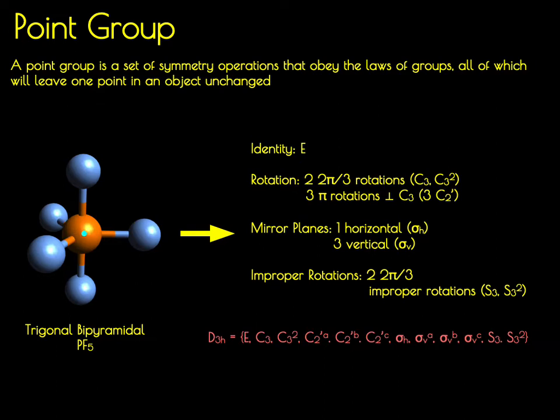These include the identity element, two rotations along the z-axis, three rotations in the xy plane, a horizontal mirror plane, three vertical or dihedral mirror planes, and two different improper rotations. We can group these together and assign this molecule to the D3H point group. What we're going to do is define what we mean by that notation D3H and learn how we can easily assign this molecule to the D3H point group.